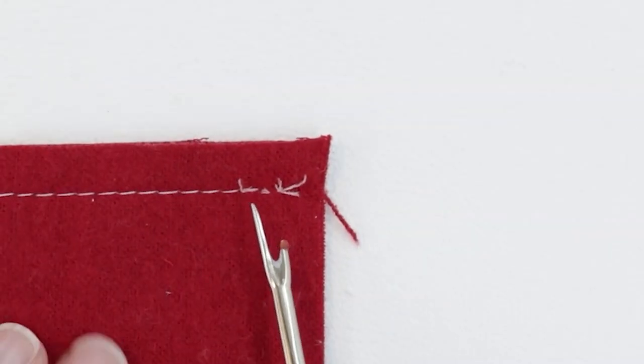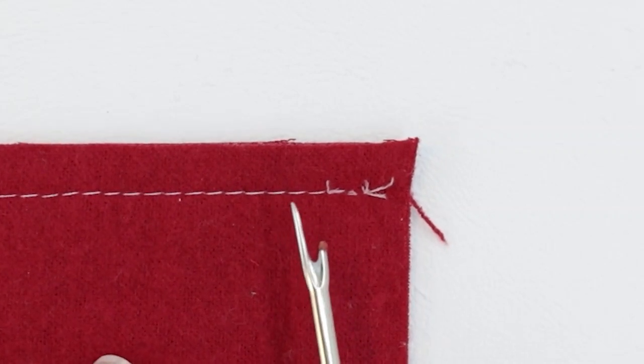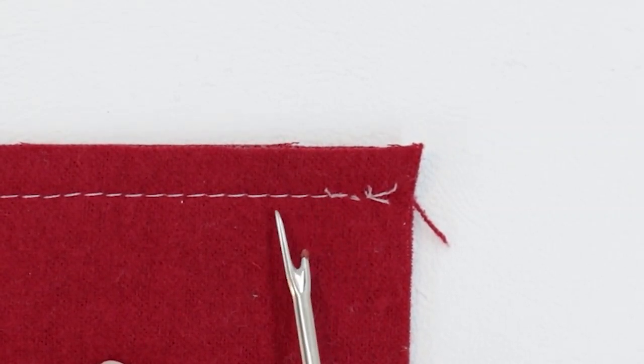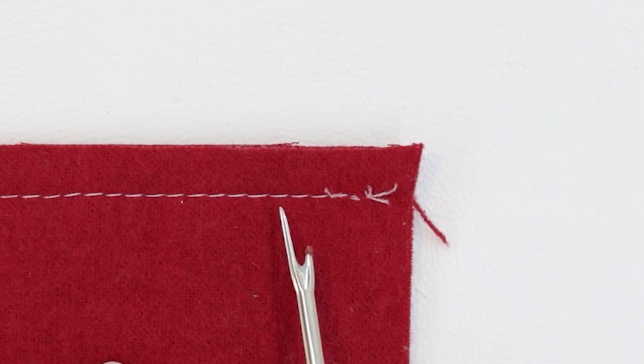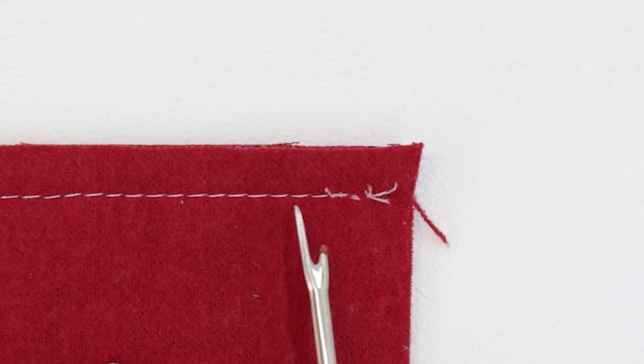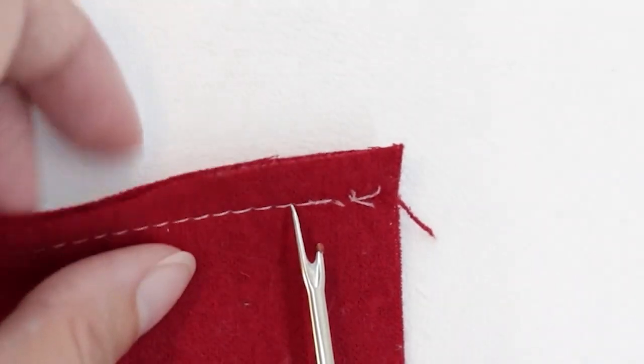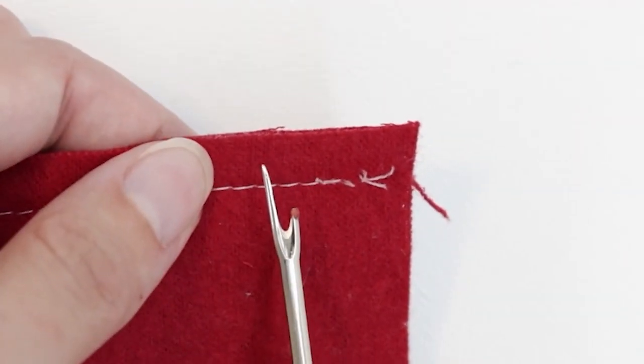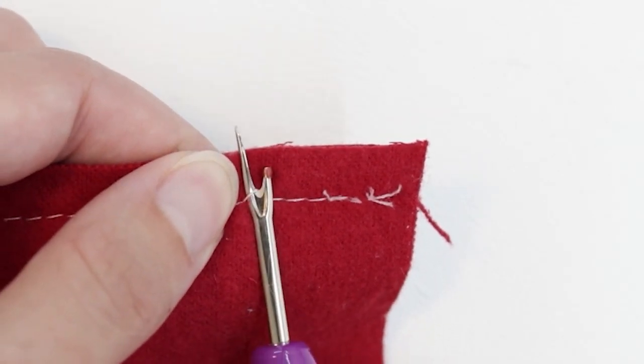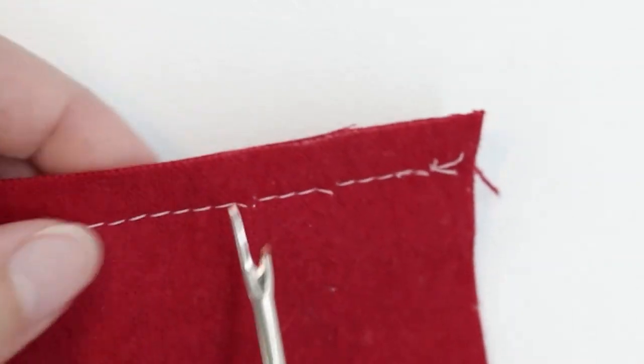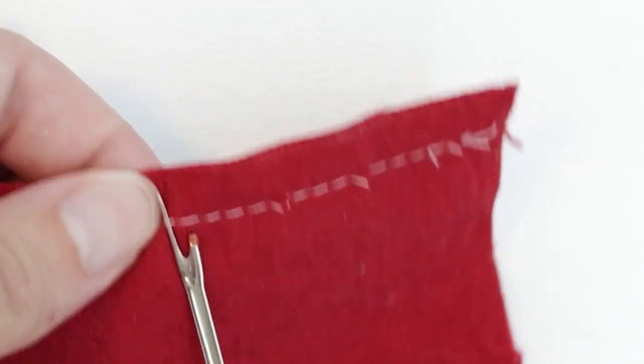Once you get to the section that does not have backstitching, you don't have to do every single stitch. I like to do about every fourth stitch, depending on the size. My stitch length here is a little longer, so probably every fourth or fifth stitch would be fine. So I'm just going to keep my seam ripper to its side and undo my stitches.